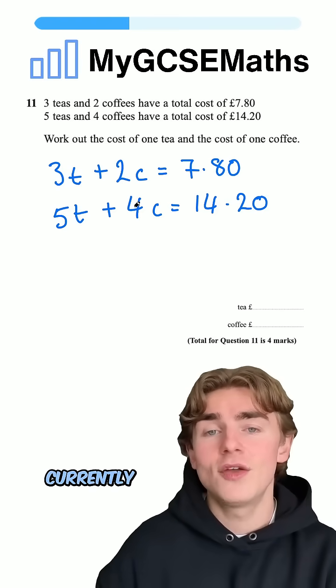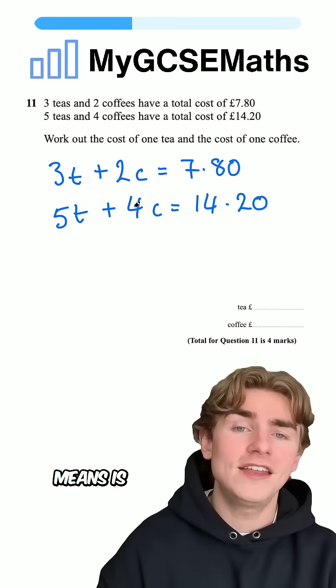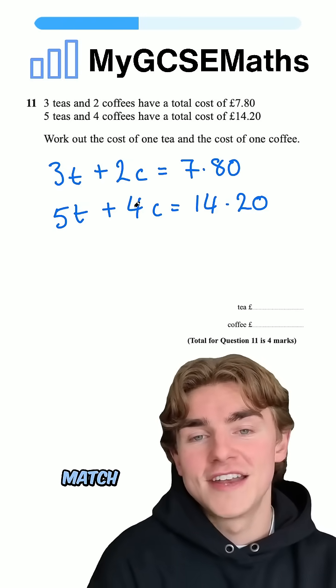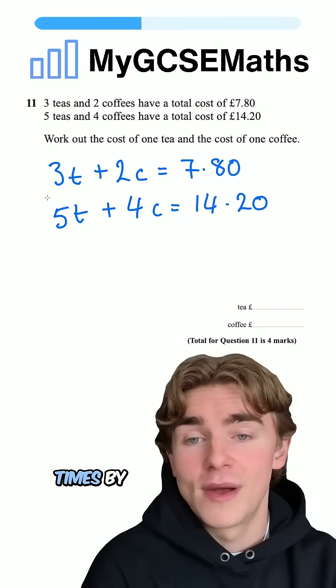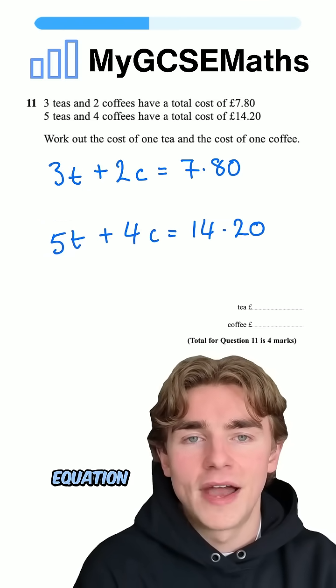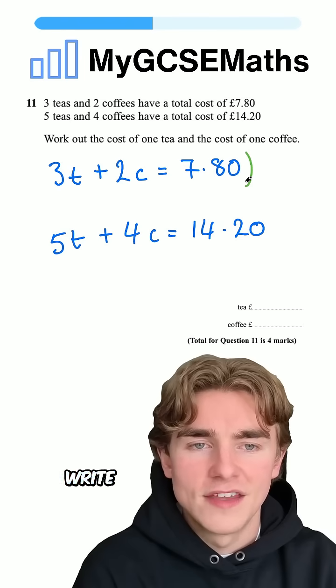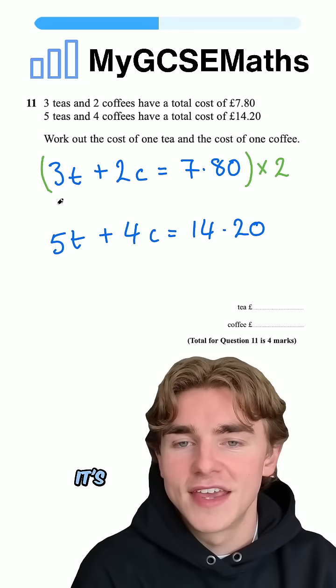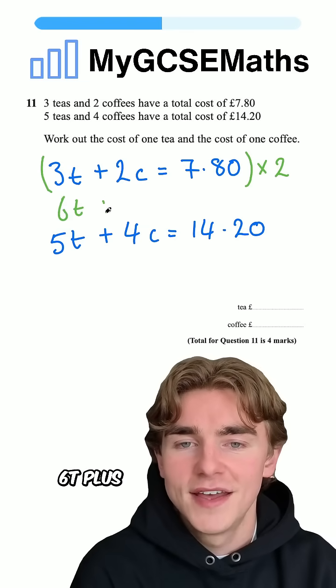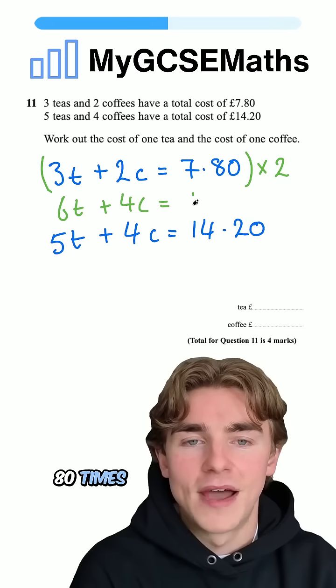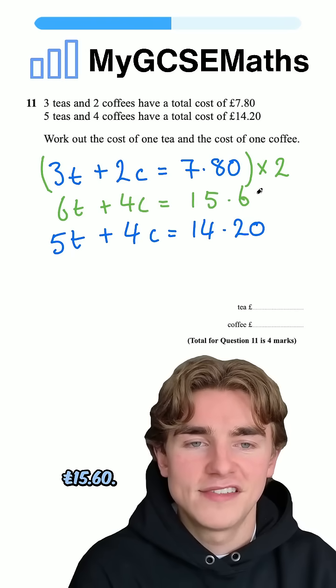Why? Because currently we have a two and a four. What that means is that if we multiply our first equation by two, we're going to have a match next to our c's because two times by two is going to give us four. I'm just going to move this one down quickly. We're going to times this top equation by two. So we're going to times this by two. And what's that going to give us? It's going to give us 3t times 2 is 6t plus 2c times 2 is 4c. Seven pound 80 times by two is going to be 15 pounds 60.